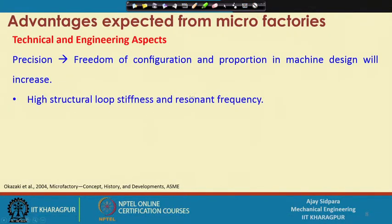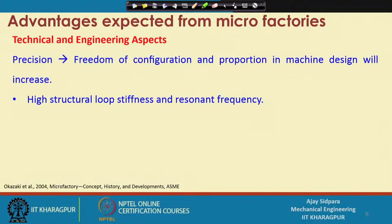High structural loop stiffness and resonance frequency — this is somewhat debatable. Stiffness is high in terms of individual components because smaller components are very difficult to deform. However, when you consider the loop stiffness with all things connected and vibration present, the whole structure undergoes vibration. For individual components, high structural loop stiffness is good, and the resonant frequency is very high, so you can go with high speed and high translation motion without problems.